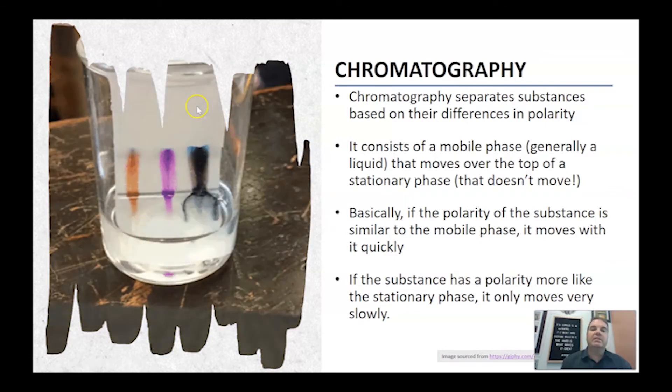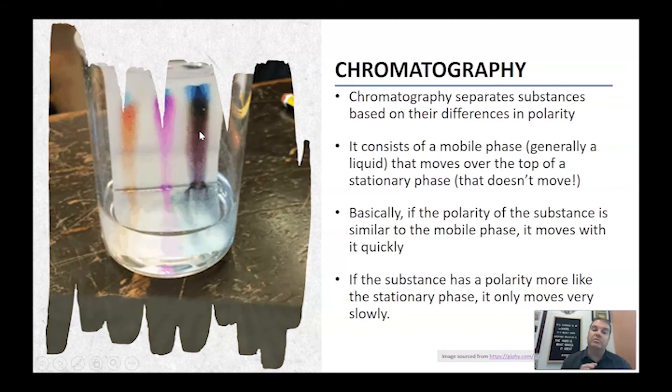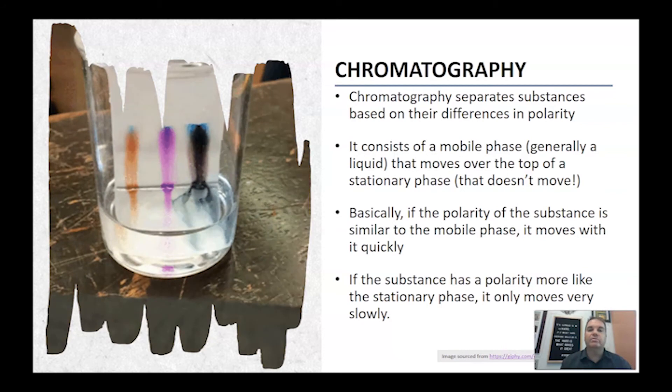You can see the blue, for example, on each of them is moving up really quickly, so the colors separate and the blue is right up the top. That means the blue is really strongly attracted to the mobile phase and moving quickly, and it's not strongly adsorbed to the stationary phase, the paper at all. That's why it moves so quickly.